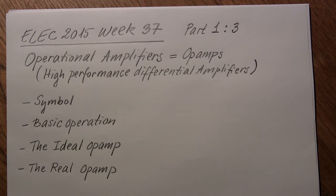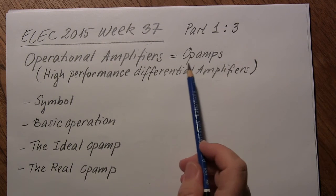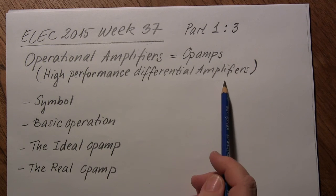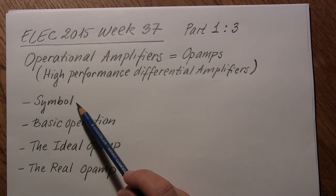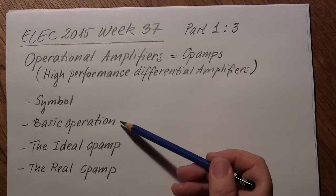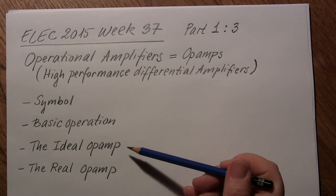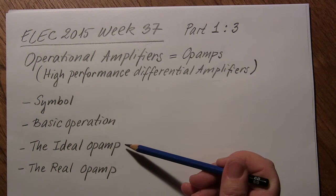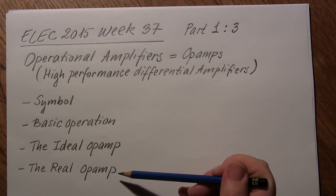Welcome to ELEC week 37, part 1 of 3. Today we are going to look at operational amplifiers, also called op-amps. They are high-performance differential amplifiers. We will look at first the symbol, then the basic operation, then the ideal op-amp model for analysis purposes, and together with the real op-amp also for analysis purposes.